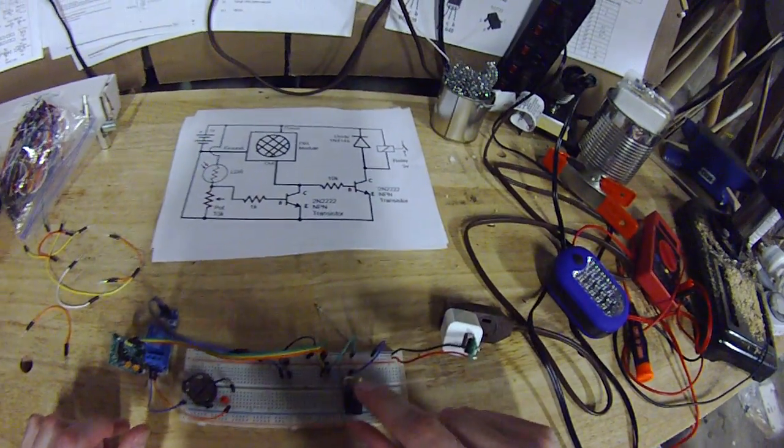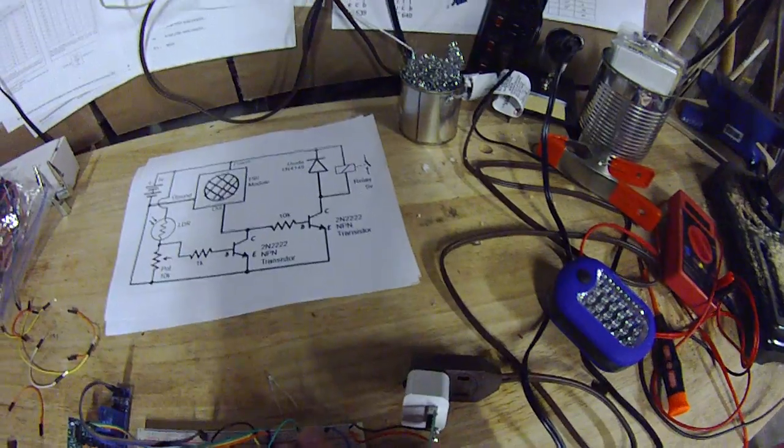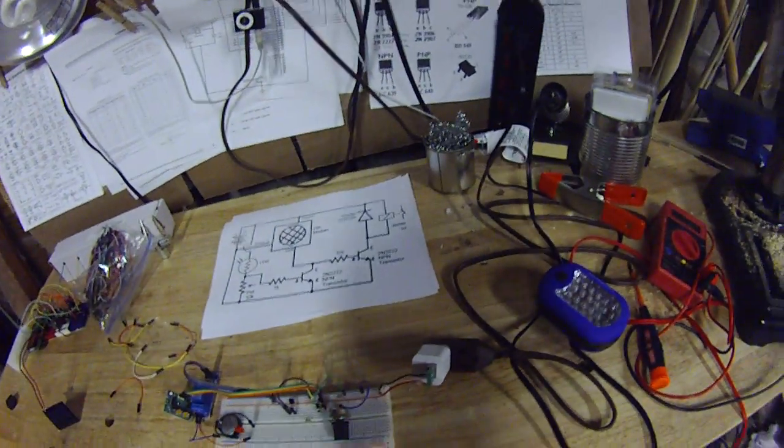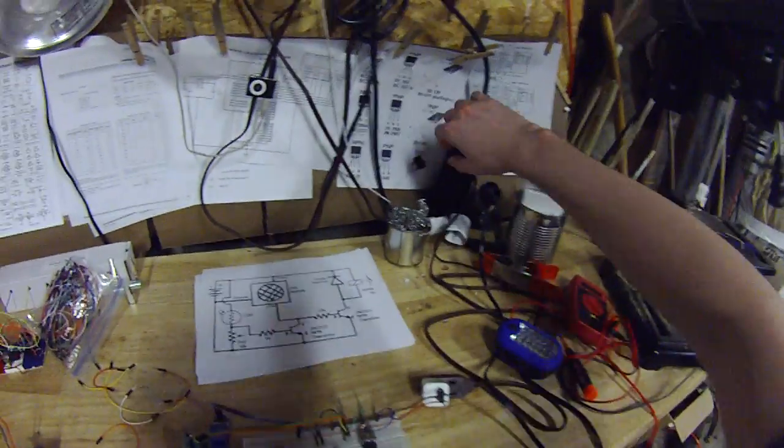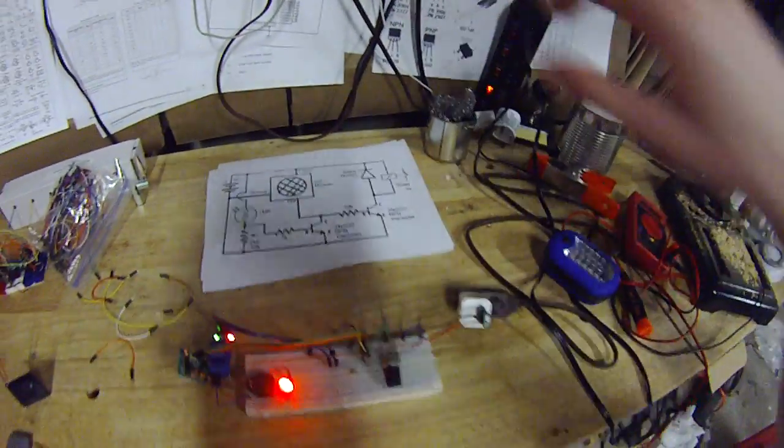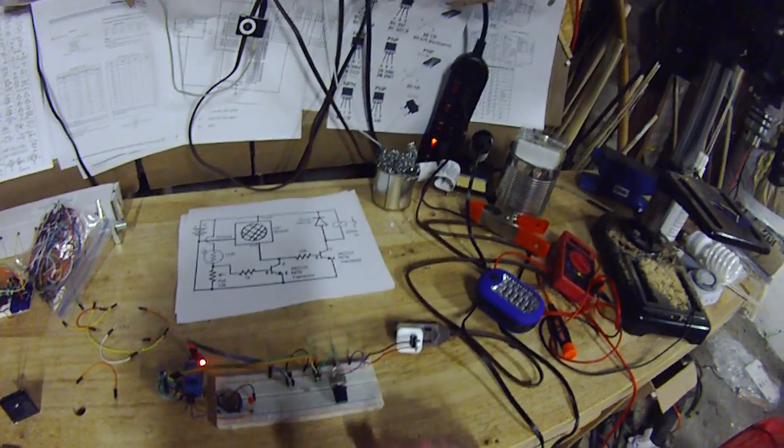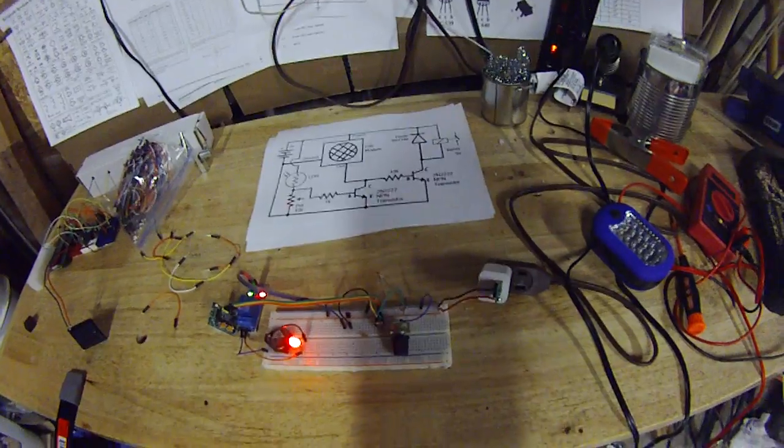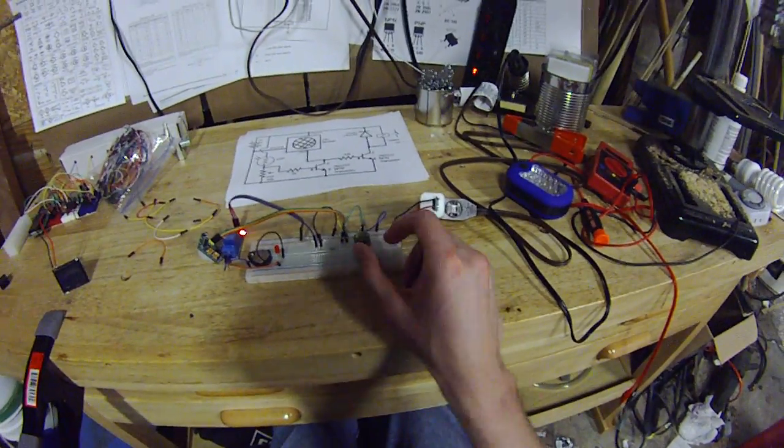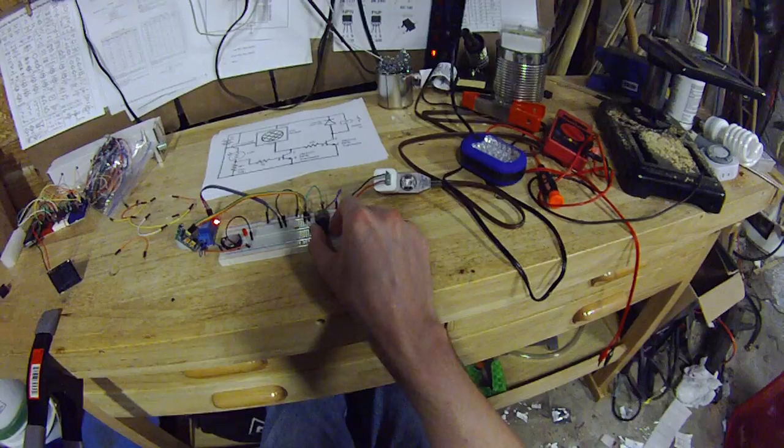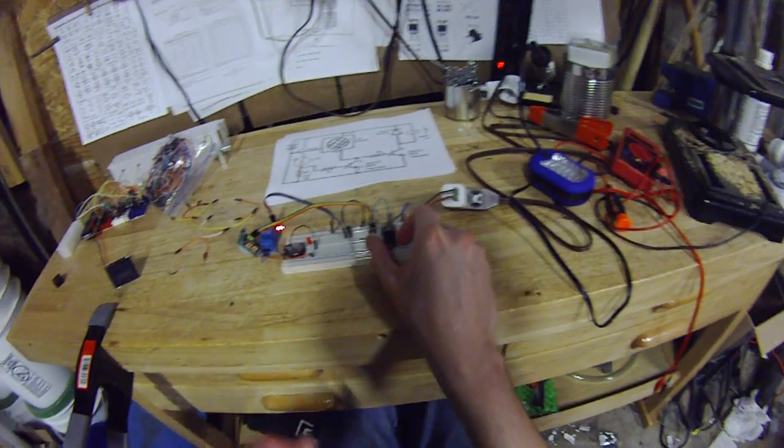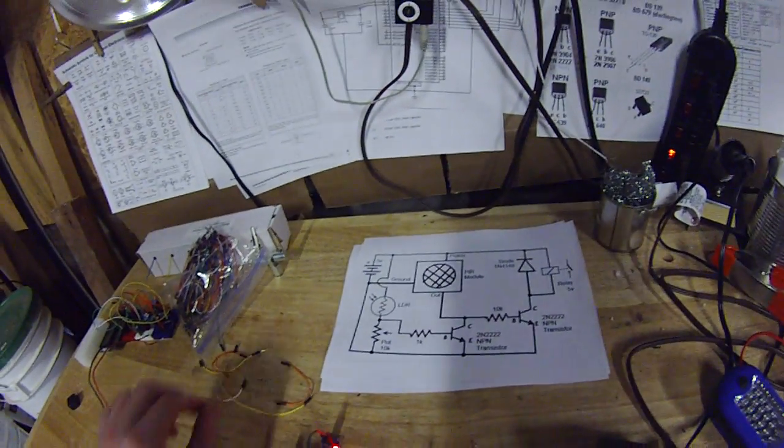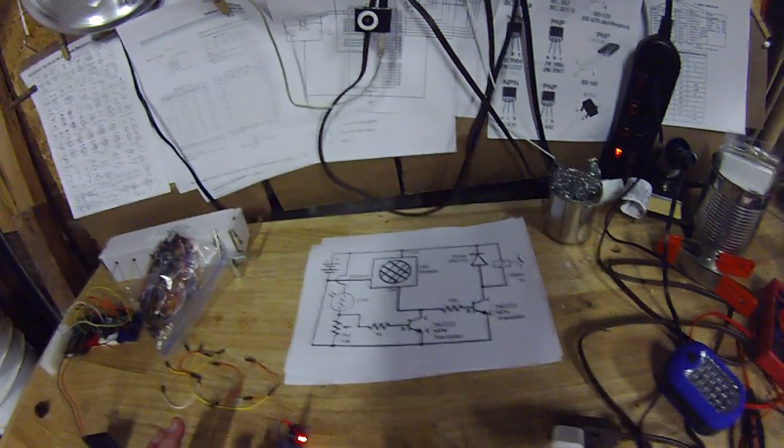So that should be everything. And this might actually be able to detect ambient lighting. Because you can tune it using this potentiometer. That's what it's there for. Otherwise, you could just use a regular resistor. So it's currently not bright enough in here to short it out. Otherwise, you wouldn't be seeing that LED come on. So let me see if I can tune it so that it doesn't do that.